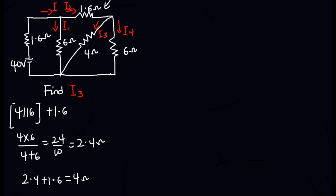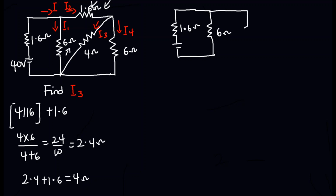So this 4 ohms will be in parallel connection with the 6 ohms. To see this more clearly, I'm going to redraw the circuit. We have 1.6 ohms, and 6 ohms, and I've combined the 4 and 6 in parallel to get 2.4 ohms, which in series with 1.6 gives 4 ohms. That 4 ohms is now in parallel with the 6 ohms, and we have the total voltage of 40 volts.